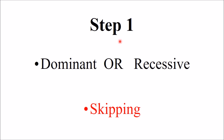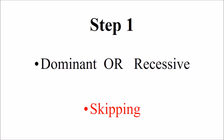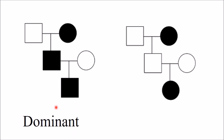Step number one: first we have to find whether the inheritance pattern is dominant or recessive. For this, we use one simple idea — is skipping present or not? In the first pedigree, all three generations are continuously affected with no skipping, which is a dominant pattern. In the second, the first and third generations are affected but the second is not — this skipping pattern indicates a recessive inheritance.